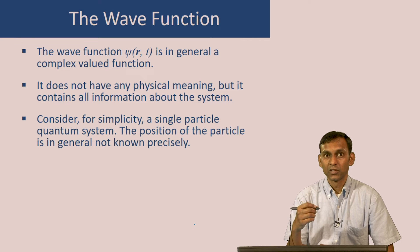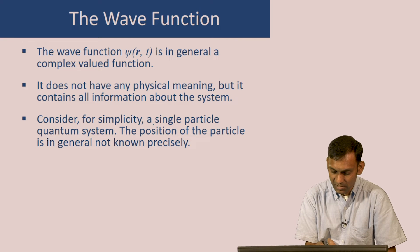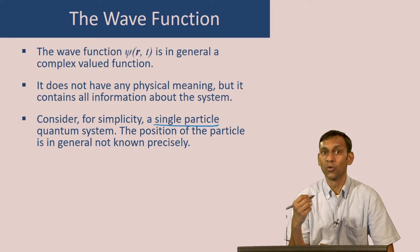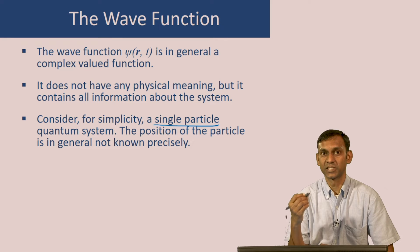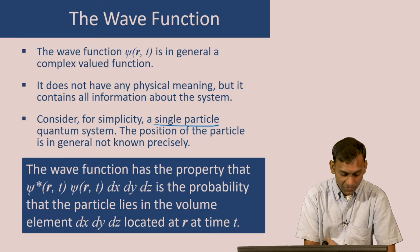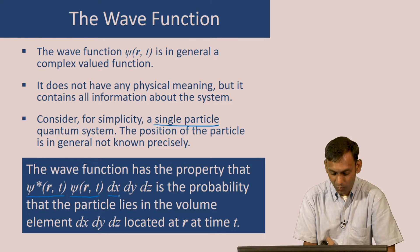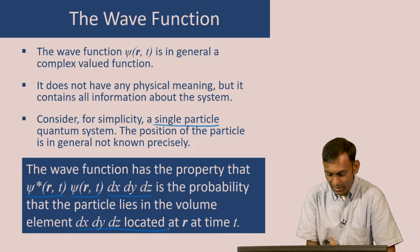The first thing we would want to know is the position of the system. Let us consider a simple situation where our quantum system consists of a single particle. The position of a quantum particle is in general not known precisely, but the wave function tells us something about the position — not its precise position, but where the particle can be found. The wave function has a property that if you take psi, multiply by its complex conjugate psi star, and then multiply by a small volume element at position r, this entire quantity is the probability that the particle lies in that volume element at time t.